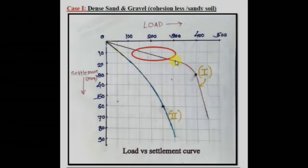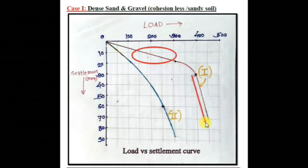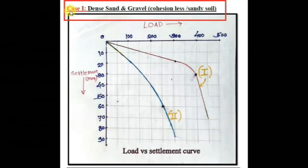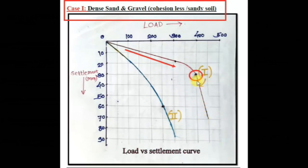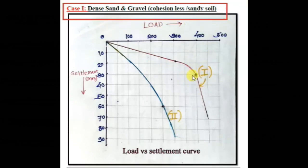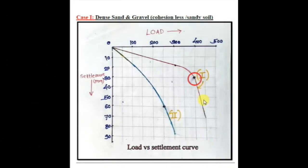At the start the curve is linear, then large settlement is observed. After application of load, sand or gravel takes more load and settlement increases gradually. After a point, a sharp increase in settlement is observed. This point indicates the soil has sheared — it is the failure point of the soil. Hence in the case of sandy soil, the bearing capacity of the plate is clearly known.